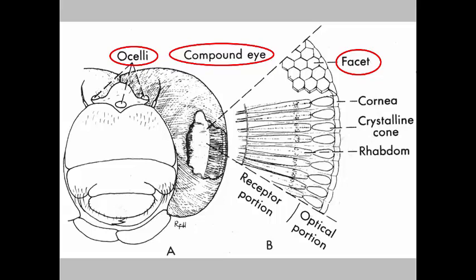In these illustrations we can see different ocelli and stemmata arrangements. The stink bug has only two dorsolateral ocelli. The cicada has two dorsolateral ocelli and a median ocellus. The caterpillar has a grouping of ocelli called stemmata that are where compound eyes would normally be. Because of the arrangement of these stemmata, caterpillars can detect gross movements in their environment.